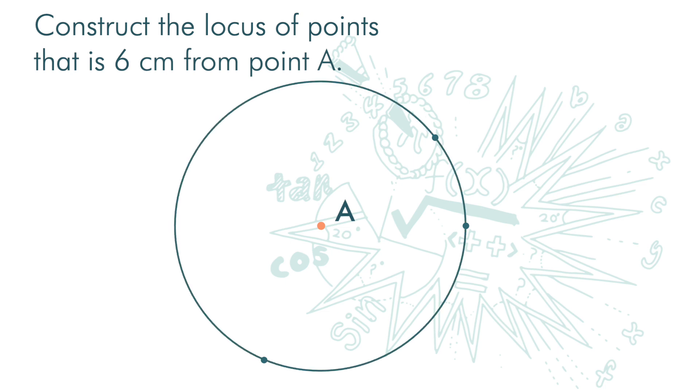And this is the locus of all points that is six centimeters from point A. Every point on the circumference of this circle is six centimeters from point A.